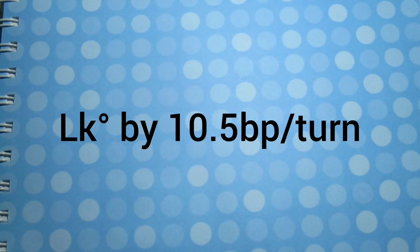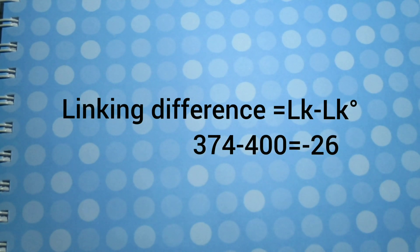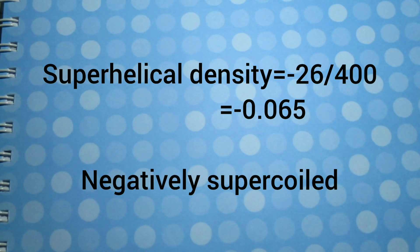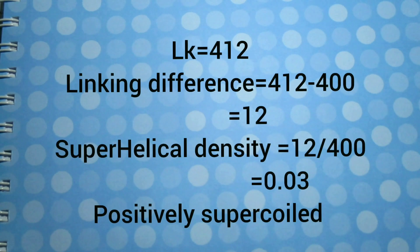4200 base pairs divided by 10.5 base pairs per turn equals 400. We can now calculate the ΔLK, the linking difference, from the equation. ΔLK equals LK minus LK°, that means 374 minus 400, that is minus 26. And the superhelical density is ΔLK divided by LK°, that is minus 26 divided by 400, equals minus 0.065. Since the superhelical density is negative, this DNA molecule is negatively supercoiled.